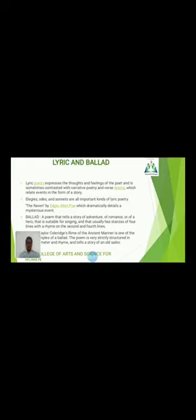He was an American poet which dramatically details a mysterious event — the mysterious events meaning the bird comes around to the ships. The next topic is Ballad. A ballad is a poem that tells a story of adventure or romance or a hero, and is suitable for singing. It usually has stanzas of four lines with a rhyme on the end of the second and fourth lines. The famous ballad work is Samuel Taylor Coleridge's A Rime of the Ancient Mariner, one of the best examples of a ballad. In this poem, very strictly the rhyme scheme was followed along with the meter and the technical elements of the poem.